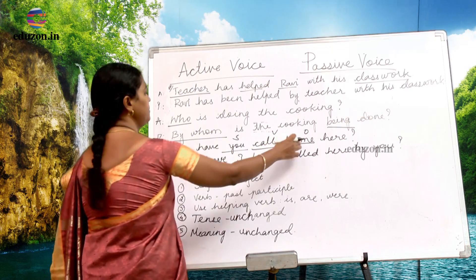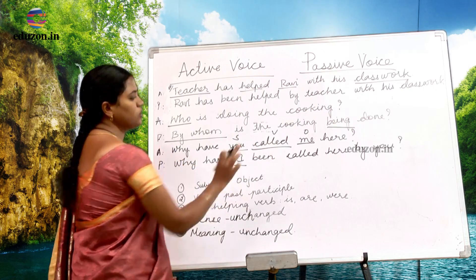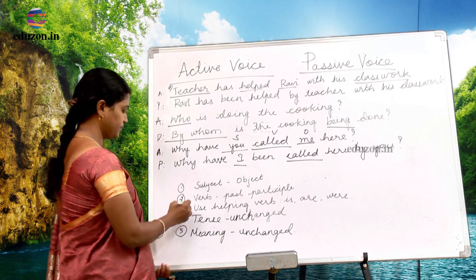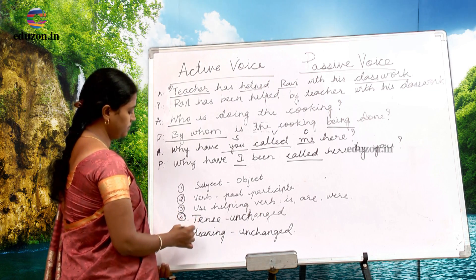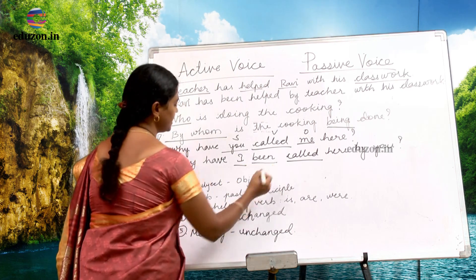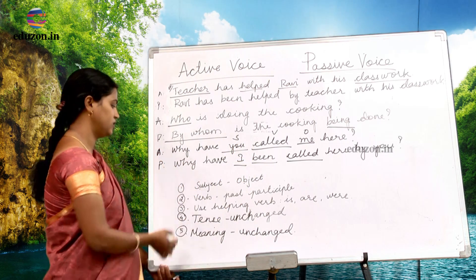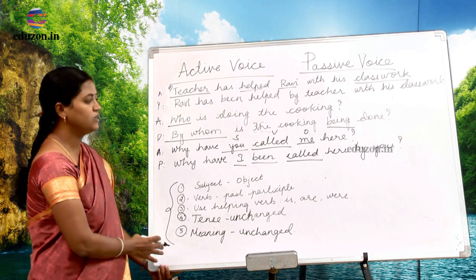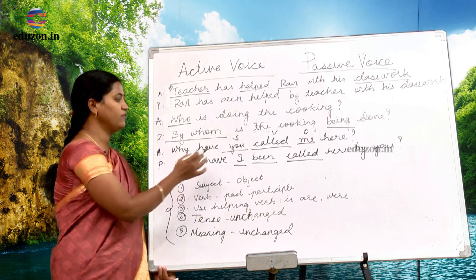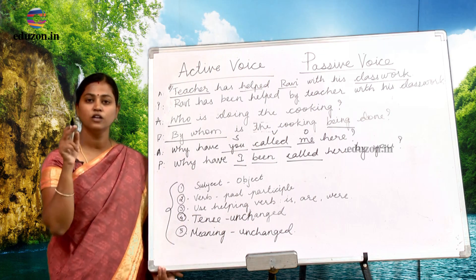When the object 'me' converts into the subject in passive voice, it becomes 'I' — not 'me.' So: 'Why have I been called here?' Call → called; past participle 'called' is used. Tense has not been changed. Meaning has not been changed. Verb is in past participle form. Helping verb 'been' has been used. Subject 'you' and object 'I' have been interchanged. All five rules have been followed when converting 'Why have you called me here?' into 'Why have I been called here by you?'